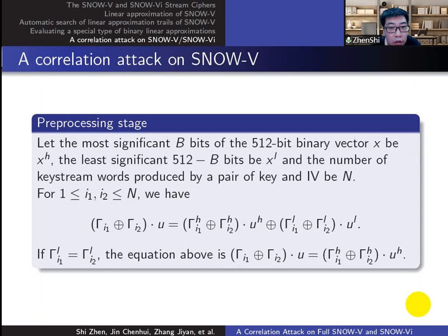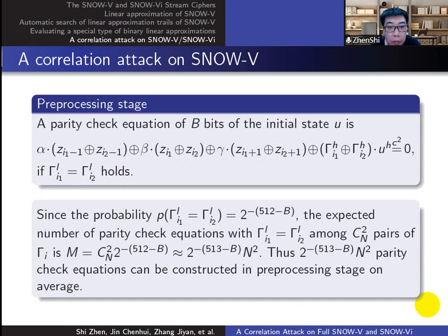We cannot guess all the initial state bits at once, so we will find some effective collisions, such that part of the masks of the initial state are zero in the pre-processing stage. By collision, we can get parity check equations of this form, which only contains part of initial state bits.